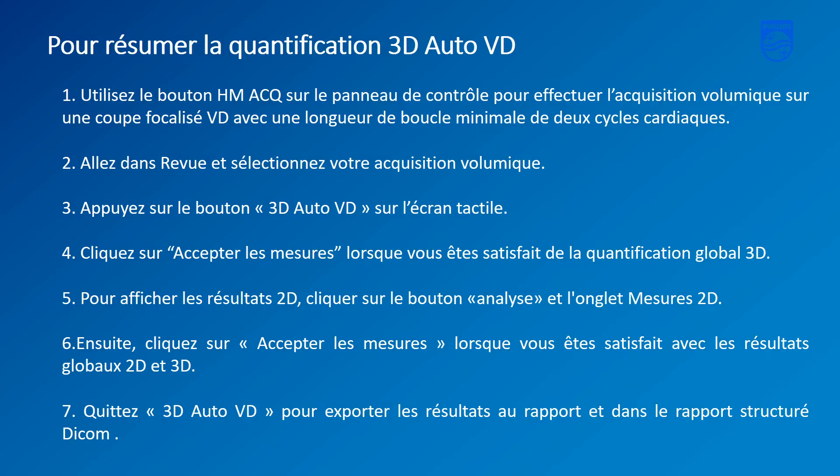Summarizing the 3D Auto RV analysis: Use the HMACQ button on the touch panel to acquire a RV focused 3D full volume with a minimum loop length of 2 beats. Go into review and select the acquired 3D dataset. Press 3D Auto RV on the touch screen. Click accept measurements when satisfied with the 3D global results. To view the 2D results, click analysis and the 2D measurements tab. Then click accept measurements when satisfied with the 2D and 3D global results. Exit 3D Auto RV to export the results to the report and DICOM structured report.